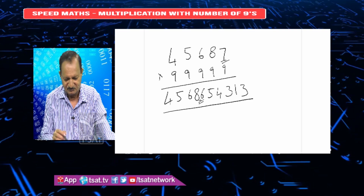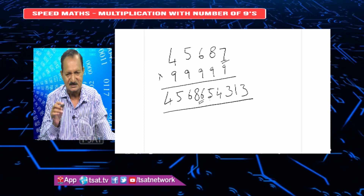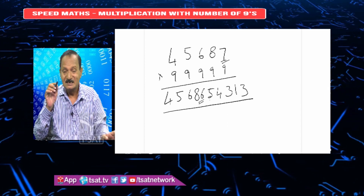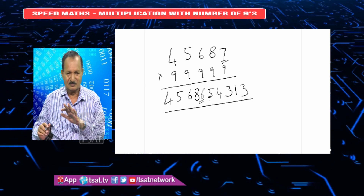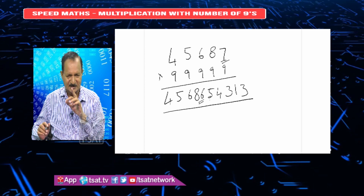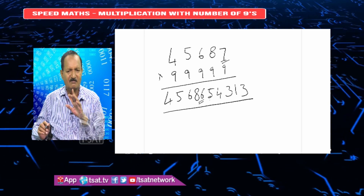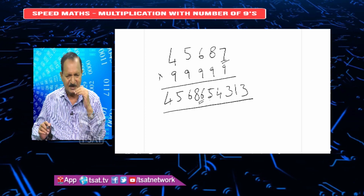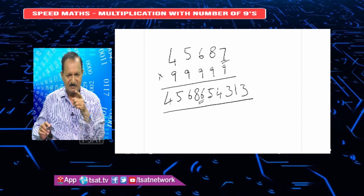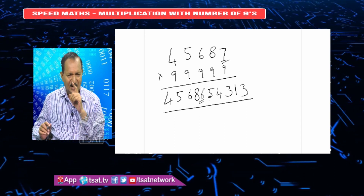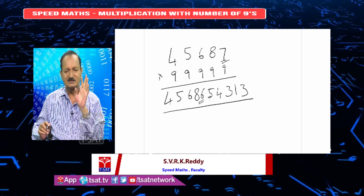Next step: subtract all from 9, last from 10. First, 9 minus 4 is 5. Next, 9 minus 5 is 4. 9 minus 6 is 3. 9 minus 8 is 1. And last, 10 minus 7 is 3. So the answer is 45686 54313. Subtract 1 from top number gives 45686 — half the problem is over. Next half: subtract all from 9 and last from 10. 9 minus 4 is 5, 9 minus 5 is 4, 9 minus 6 is 3, 9 minus 8 is 1, and finally 10 minus 7 is 3. So the answer is 4568654313.